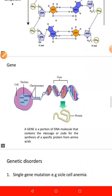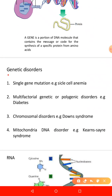There are some genetic disorders we will encounter in pathology. Single gene mutation — for example, sickle cell anemia. Multifactorial or polygenic genetic disorders — such as diabetes, arthritis, and coronary heart disease. Chromosomal disorders — such as Down syndrome. And mitochondrial DNA disorders — such as Kearns-Sayre syndrome.